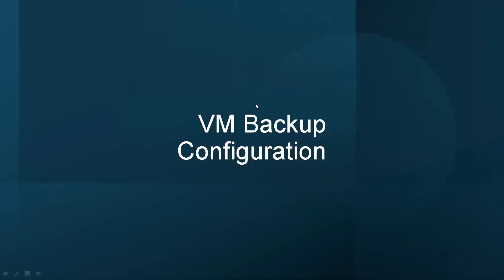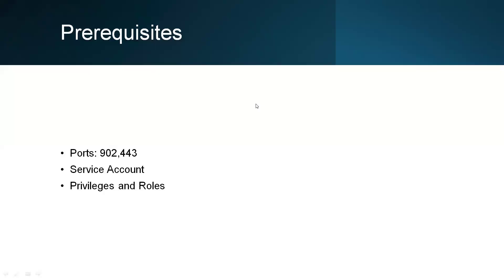Welcome back. Today we'll learn VM and SQL backup configuration in Rubrik. Before configuring backup, we should have some prerequisites. The port should be open between ESXi host and Rubrik cluster, and vCenter and Rubrik cluster. ESXi and Rubrik cluster is port 902, and vCenter and Rubrik cluster is 443.